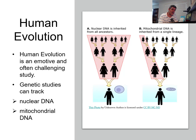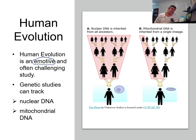Human evolution is one of these very emotive and challenging studies. It's one of the things that can generate quite a deal of controversy. There can obviously be religious elements to it as well, and unfortunately it has inspired some fraudulent activity in its history — probably Piltdown Man is the most recognizable example of that. Nevertheless, genetic and population studies, and certainly as we've learned more about the human genome, we've started to unlock some of the information about human ancestry.